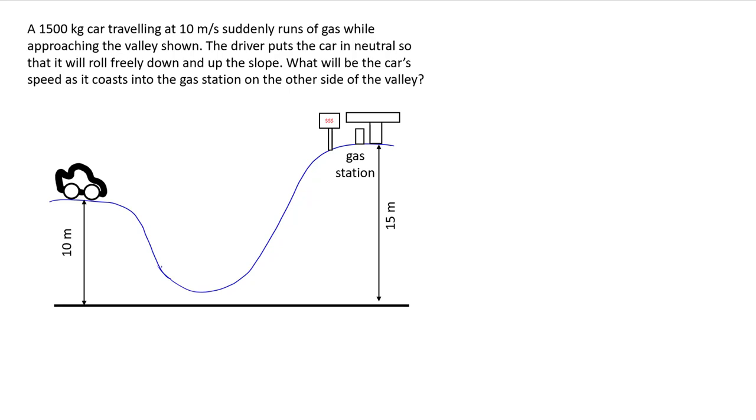You could probably see that it would be very difficult to work this out using F equals MA and then kinematics because we're actually not even told how the profile of the slope goes. If you have a problem like this where it relates two different points in time and we don't really care about things in between, that's a good tip-off that we're dealing with some kind of conservation laws.